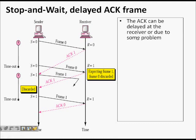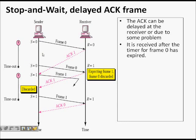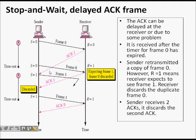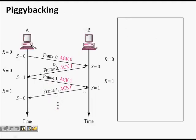The ACK can be delayed at the receiver due to some problem — received after the timer for a frame expired. The timer expires before receiving ACK 1, so the frame is sent again. The key point is that even if an acknowledgement is delayed, retransmission can occur.